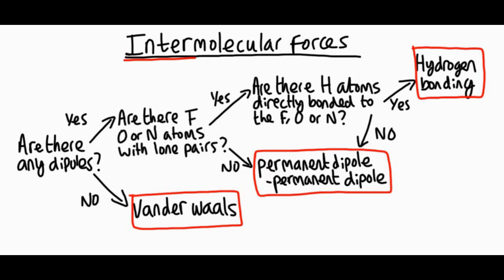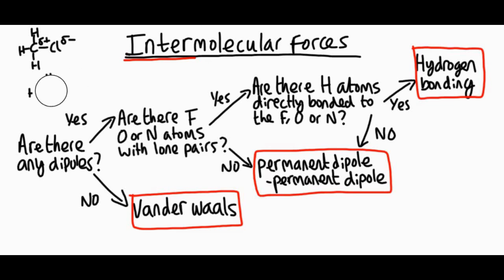Let's take chloromethane, CH₃Cl. Are there any dipoles on the molecule? Yes — chlorine is more electronegative than carbon. Are there F, O, or N atoms with lone pairs? No. So it ends up being permanent dipole–permanent dipole: the delta minus chlorines are attracted to the delta plus carbons.